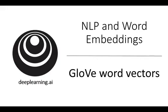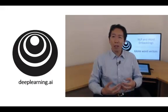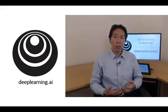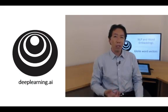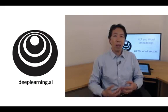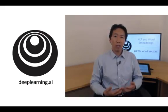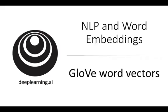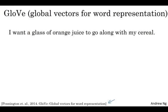You learned about several algorithms for computing word embeddings. Another algorithm that has some momentum in the NLP community is the GloVe algorithm. This is not used as much as Word2Vec or the Skip-gram models, but it has some enthusiasts because of its simplicity. Let's take a look. The GloVe algorithm was created by Jeffrey Pennington, Richard Socher, and Chris Manning, and GloVe stands for Global Vectors for Word Representation.